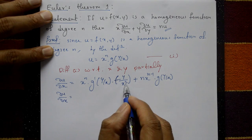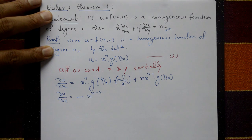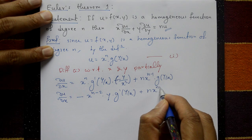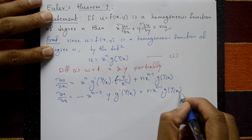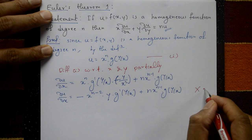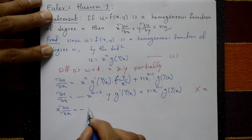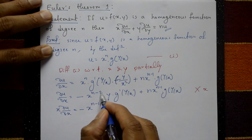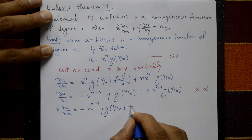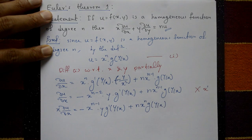∂u/∂x equals minus x² shifted to numerator as xⁿ⁻², times y · g′(y/x), plus n · xⁿ⁻¹ · g(y/x). Multiplying by x: x · ∂u/∂x equals minus xⁿ⁻¹ · y · g′(y/x) plus n · xⁿ · g(y/x). This is equation number two.